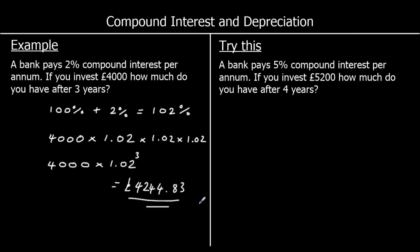There's a question for you to try — pause the video and give it a go, then press play when you're ready. A bank pays 5% compound interest per annum. You invest £5,200. How much do you have after 4 years? We're going to have 100% and we're adding on 5%, so we'll have 105% at the end of each year. As a decimal, that would be 1.05 — we call that our multiplier.